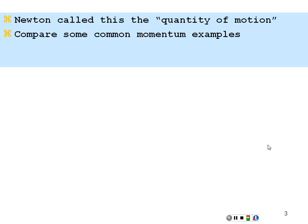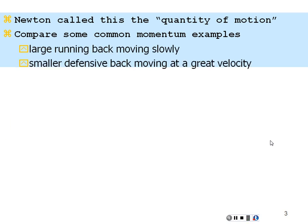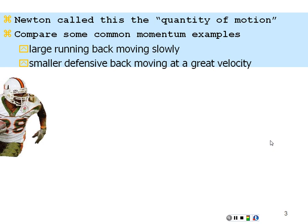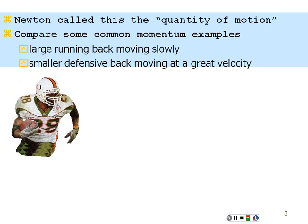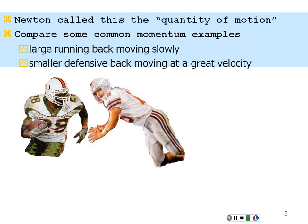Newton called this the 'quantity of motion.' For example, a large running back moving slowly has some momentum — his mass times his velocity. To stop him, you need to take that momentum away. A smaller defensive back with less mass but greater velocity can match the same momentum in the opposite direction and make the stop, prevent the first down, win the national championship.